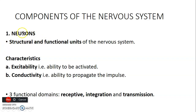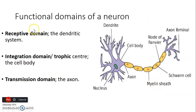The main component of the nervous system is the neuron, which is the structural and functional unit of the nervous system. It has two characteristics: it is excitable, meaning it can be activated, and it has conductivity, meaning it is able to propagate an impulse. The neuron has three domains: a receptive domain that receives signals, an integrative domain that interprets the signal, and a transmission domain that carries the impulse.